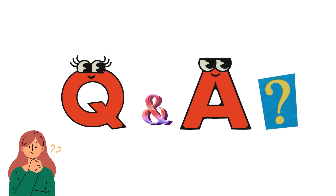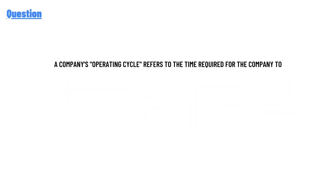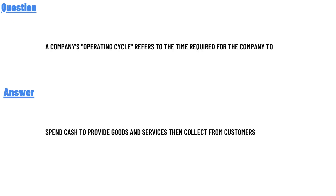Our today's question is: a company's operating cycle refers to the time required for the company to — the correct answer is: the time it spends cash to provide goods and services and collect from customers. So that is the answer to the question.